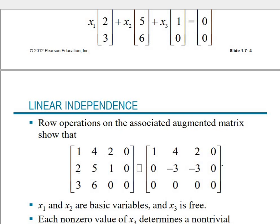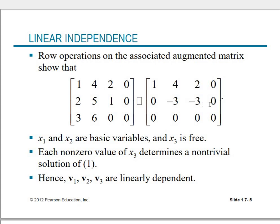We will not repeat this method in detail since we have done it many times. After reducing, we get the equations: x1 + 4x2 + 2x3 = 0 and -3x2 - 3x3 = 0. Here x1 and x2 are basic variables and x3 is a free variable. Since free variables are involved, non-trivial solutions exist, so this is not a linearly independent set — it is linearly dependent.